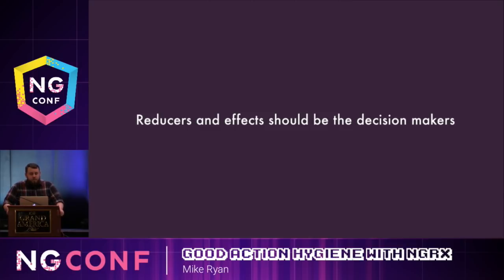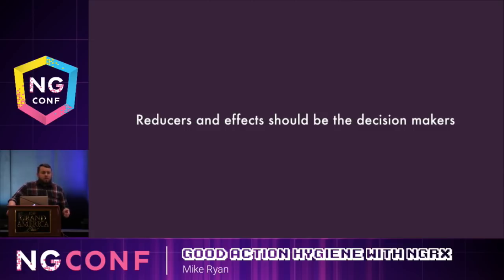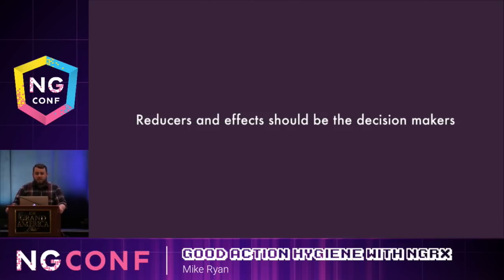You want to make reducers and effects the decision makers in your application. This really boils down to separating the description of an event from the way it gets handled in your app. You don't want your components to decide how state changes — that's the kind of mess we're trying to avoid when we adopt NGRX. When we're using the command-driven action pattern, we are telling our components that they can decide how state changes. We want them to capture unique events and yield that decision-making process to our state changes and our side effects.